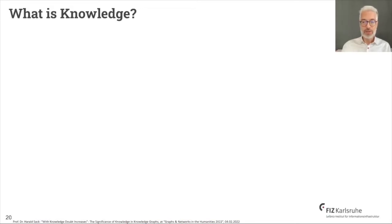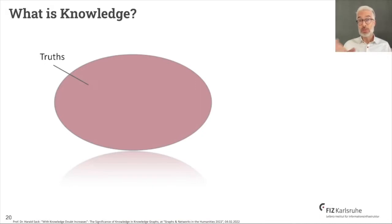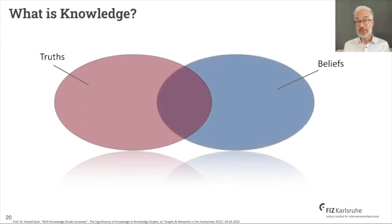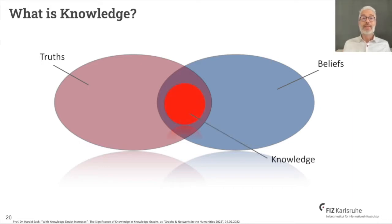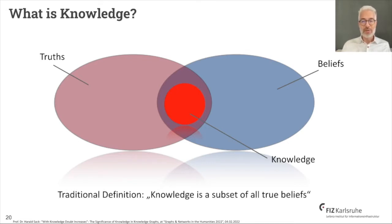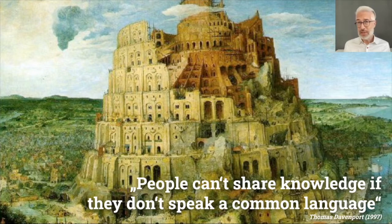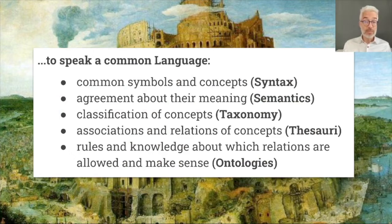From philosophy, we know there are truths in the world, and inside your head are your beliefs — not all of which coincide with what is really true. Knowledge is only a subset of that: it is the intersection of beliefs and truths of which we really know they are true. Traditional definition: knowledge is a subset of all true beliefs. To share that knowledge, we need a common language. Thomas Davenport already in the 1990s said: people can't share knowledge if they don't speak a common language — which means using common symbols, concepts, agreed-upon meanings.